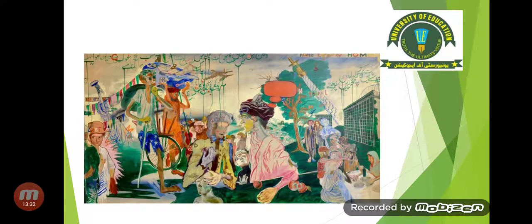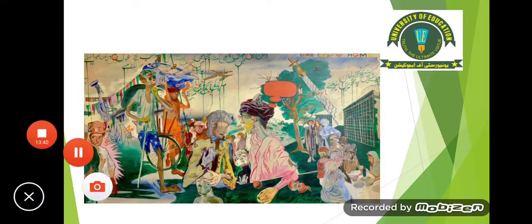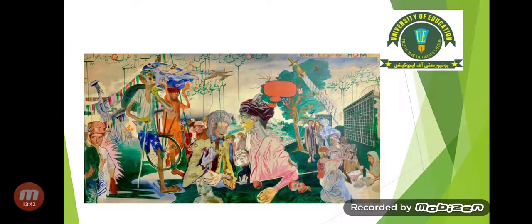He has also used text in his painting to some extent. In a very ironic way, he has tried to portray the influence of powerful superpowers on the lay persons of a specific country.